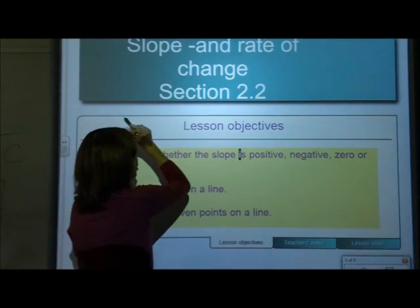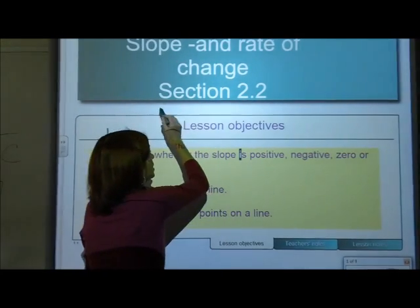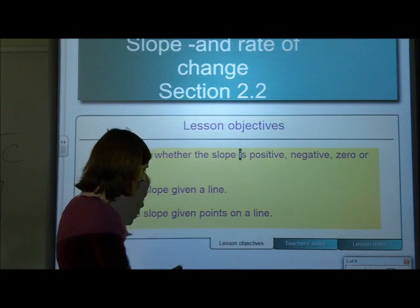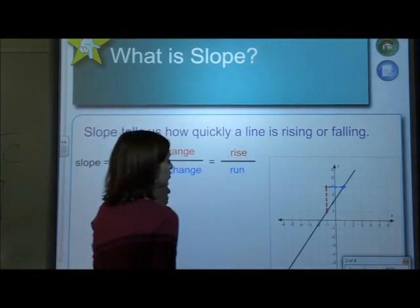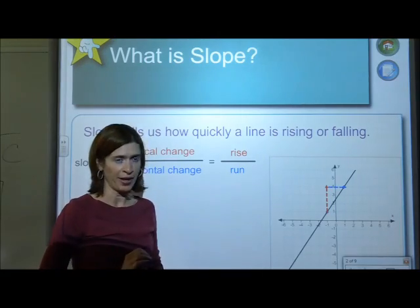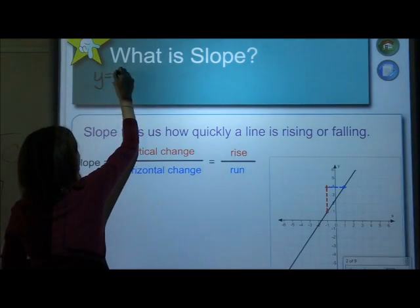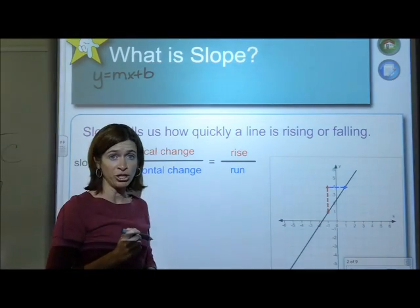All right, so the section, and what I want to see at the top is Slope and Rate of Change, Section 2.2, and I also want you to put the date at the top. We're going to be talking about different things with slope today, and you might remember this from Algebra 1. So what is slope? It means a lot of different things. I know that we've talked a lot about y equals mx plus b, and that is a linear equation.